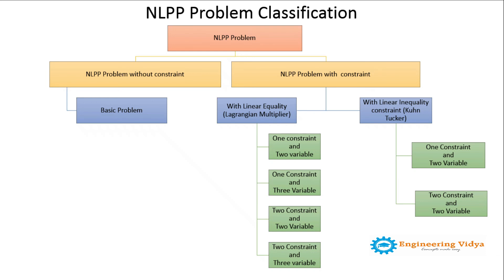Now we will see how the exercises are formed. The basic problems are placed in Exercise 1. Exercise 2 contains one constraint two variable and three variable problems. Exercise 3 and Exercise 4 contain two constraint two variable problems. Exercise 5 contains two constraint three variable problems. The last two exercises contain one constraint two variable and two constraint two variable problems solved by the Kuhn-Tucker method. This is how the classification of problems and exercises are formed.